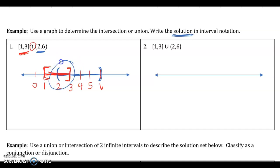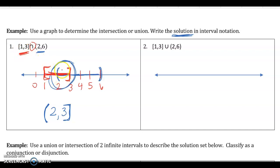Looking for the intersection means finding the overlap, which appears between 2 and 3 on the graph. The solution is the interval (2, 3]. The 3 gets a closed bracket because it's included in my first interval [1, 3], and it falls within (2, 6). The 2 gets an open bracket because even though 2 is within [1, 3], the open bracket in (2, 6) means 2 is not actually included in that interval — so since I need it in both for an intersection, I keep the open bracket on 2.